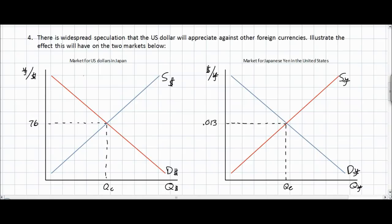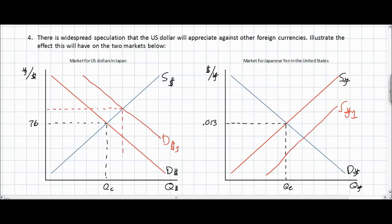The expectation of future appreciation of the US dollar should lead to an increase in the current demand for US dollars. At the same time, since Japanese investors now wish to hold more US dollars, they are going to supply more Japanese yen to the US market, increasing the supply of yen in the United States. Predictably, the increase in demand for US dollars should cause the US dollar to appreciate. Let's assume the new equilibrium exchange rate for the US dollar is 100 yen per dollar. At the higher exchange rate, American households are willing to supply a greater quantity of Japanese yen to Japanese investors.